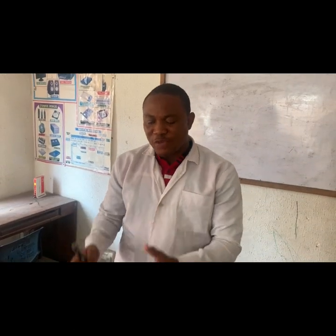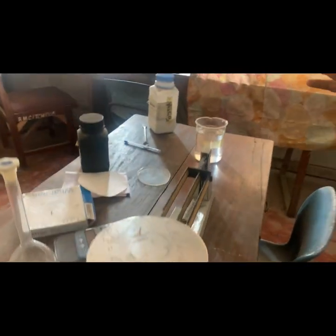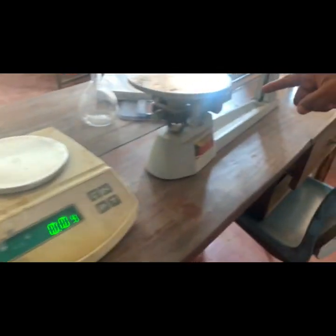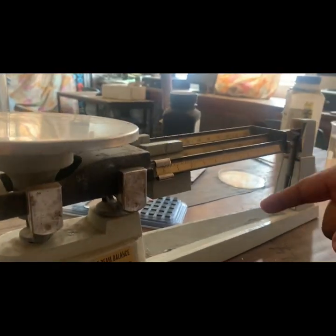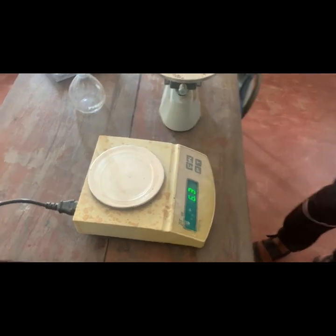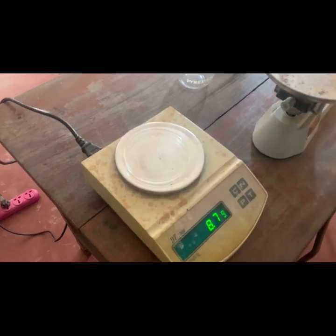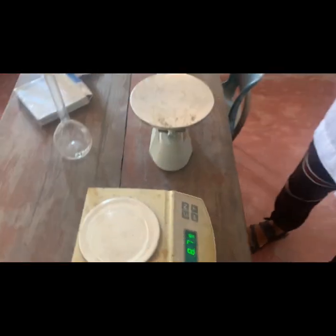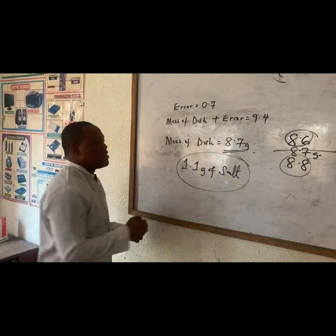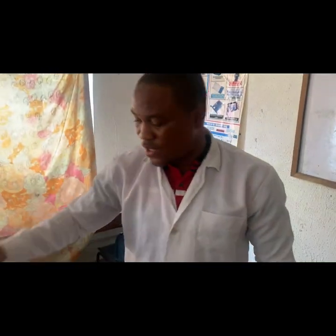Here I was explaining how to measure accurately. Some schools still don't use the digital balance — sometimes even power supply may be a problem. So how do we use the triple beam balance to measure accurately? If you use this technique, it will be as if you have used the digital balance. I was comparing the results with what the digital balance gives to see how accurately I can measure, and I was explaining how to determine the zero error if there is one.